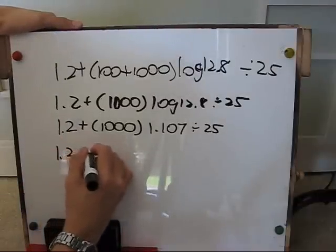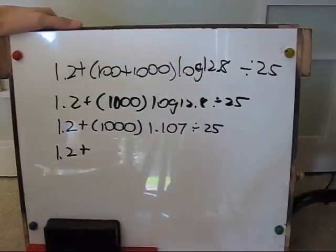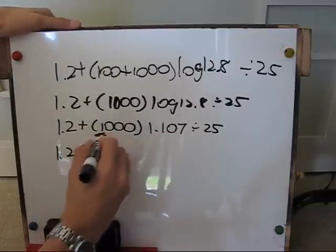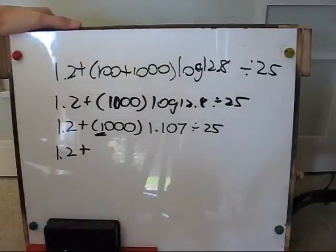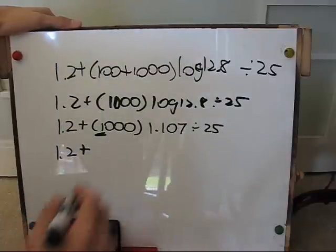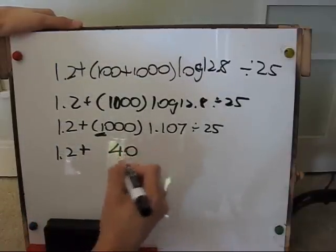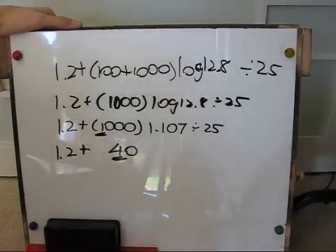Next, the multiplication and division come together. So since you're multiplying 1,000 by 1.107 and dividing by 25, you only go by one significant figure from the 1,000 because it has the fewest. And it would actually be close to 44.28 but it only rounds to 40 because it's one significant figure.